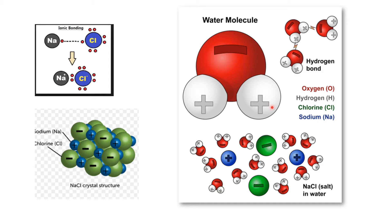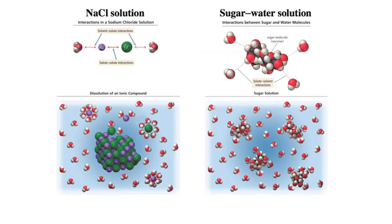Both hydrogens have a partial positive charge. When NaCl is dissolved in water, it dissociates into sodium ion and chloride ion. Because of the attraction between the sodium positive ion and the partial negative charge of the oxygen, the sodium ion is surrounded by the oxygen atoms of water, and the chloride ion is surrounded by the hydrogen atoms. The interaction between ions is solute-solute interaction, and the interaction between water molecules and ions is solute-solvent interaction.